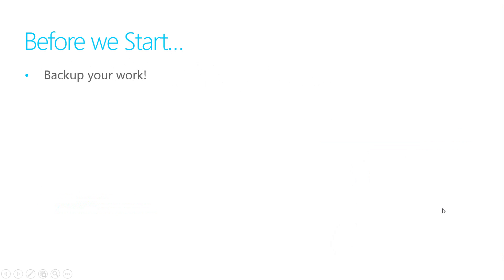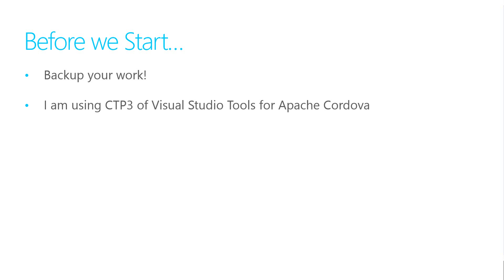Before you start, if you are doing this to an existing project, be sure you are checked into Source Control or back up your project somewhere, just in case something goes wrong. Note that these instructions are for CTP3 of Visual Studio tools for Cordova. In later versions, these steps will probably change.